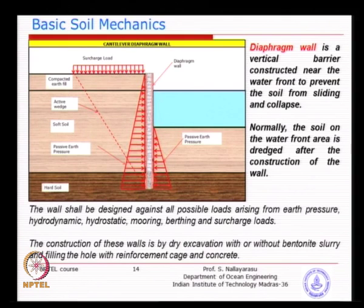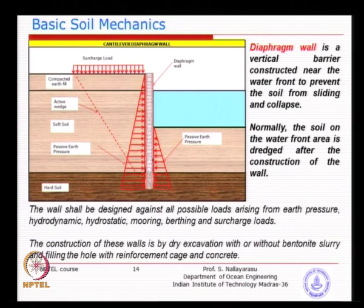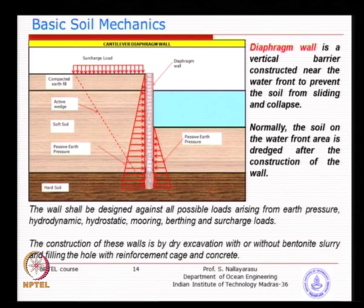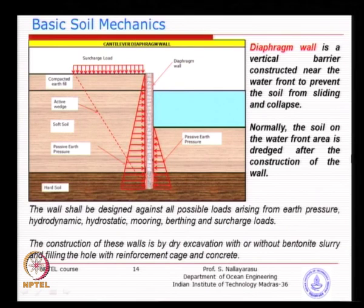The only difference for a coastal retaining wall is that a liner may not be used because driving a liner of such length is not feasible. What we normally do is construction without the liner. We can put a guide wall - either steel plate or concrete wall - of about half a meter to one meter, just to avoid collapsing of top soil. The remainder has to be self-sustaining using bentonite slurry.